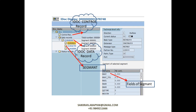The data records of the IDOC — each segment is divided into different fields, as we have seen on the earlier slide. So: control record, data record. The data record is subdivided into segments, and each segment is a collection of different fields.